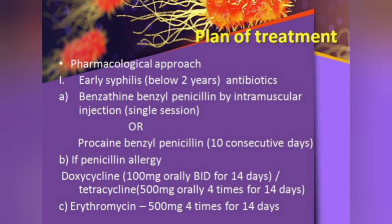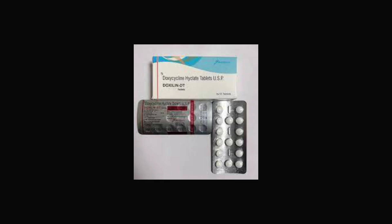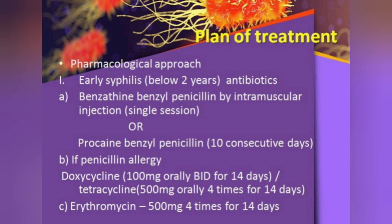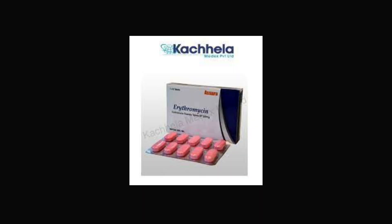For the treatment protocol: in early syphilis — less than two years — give benzathine benzylpenicillin intramuscular injection as a single session, or procaine benzylpenicillin for 10 consecutive days. If allergic to penicillin, give doxycycline 100 mg orally for 14 days, tetracycline 500 mg orally four times daily for 14 days, or erythromycin 500 mg four times daily for 14 days.